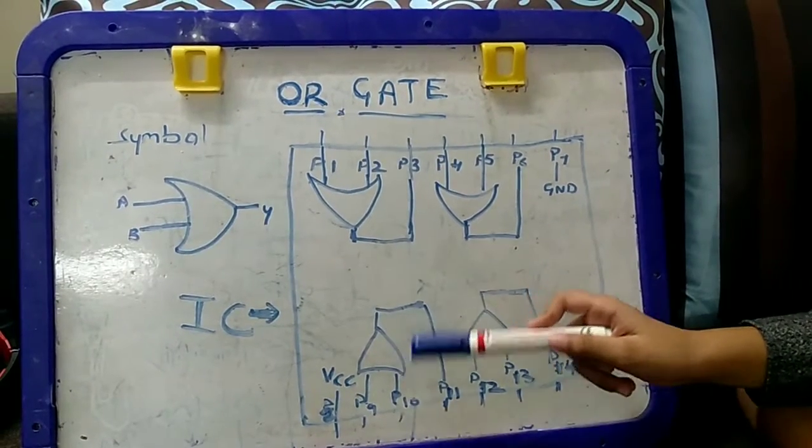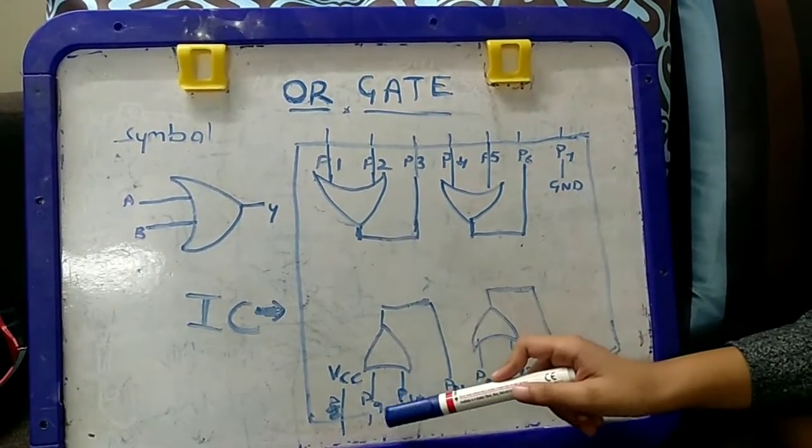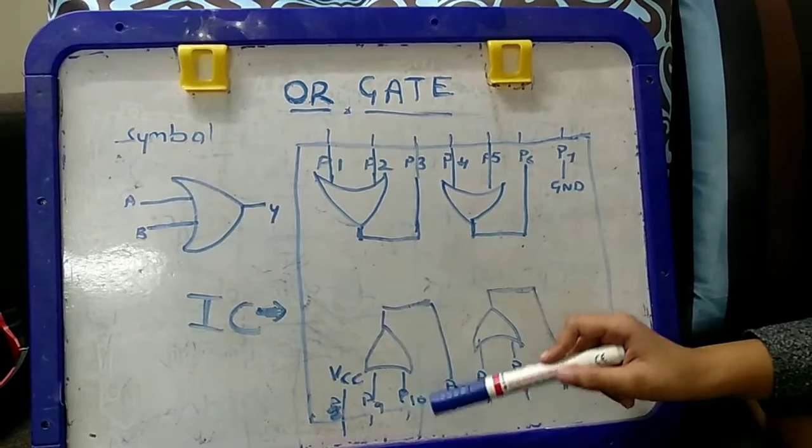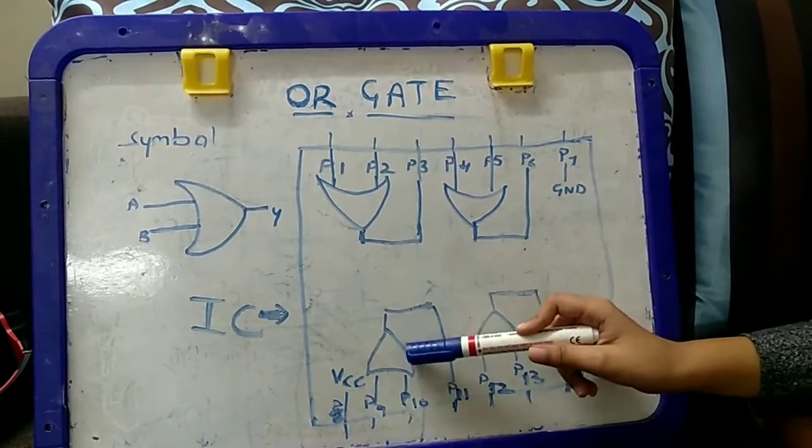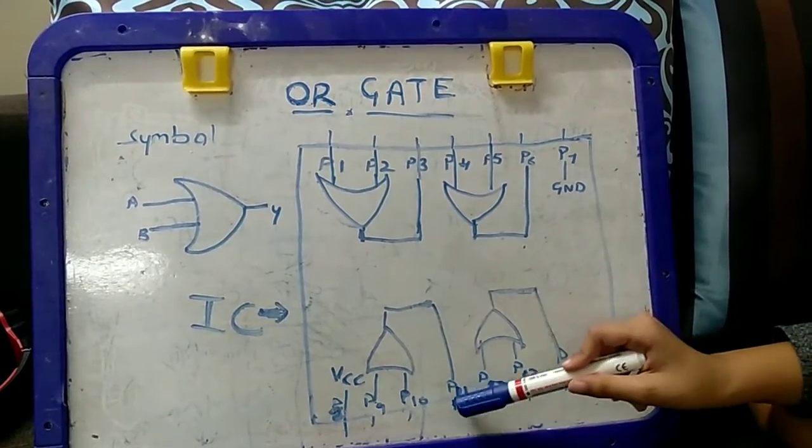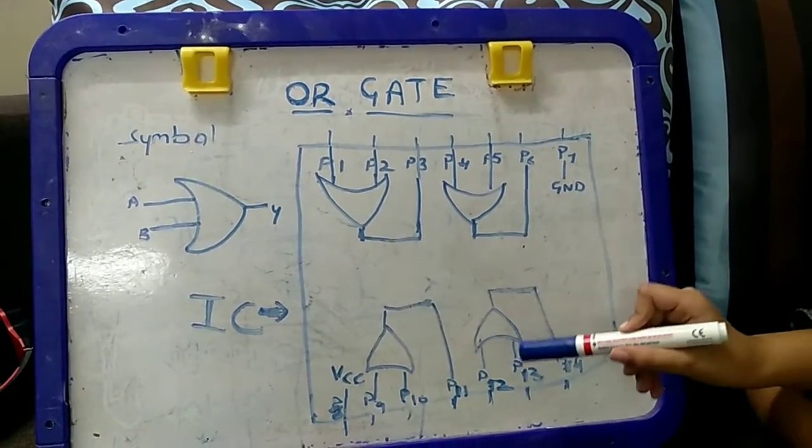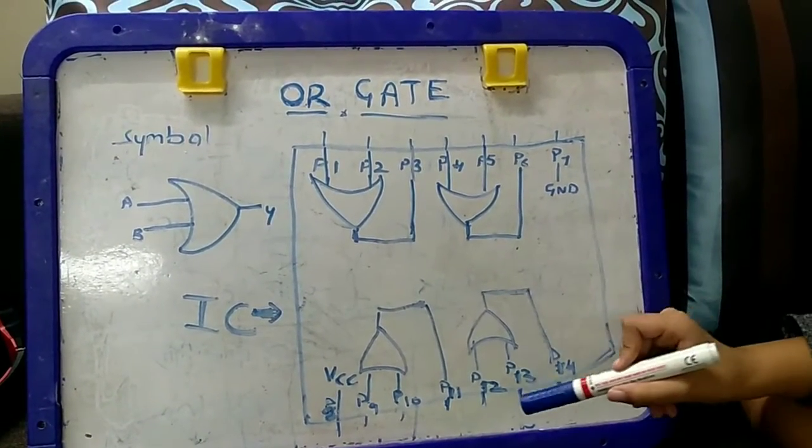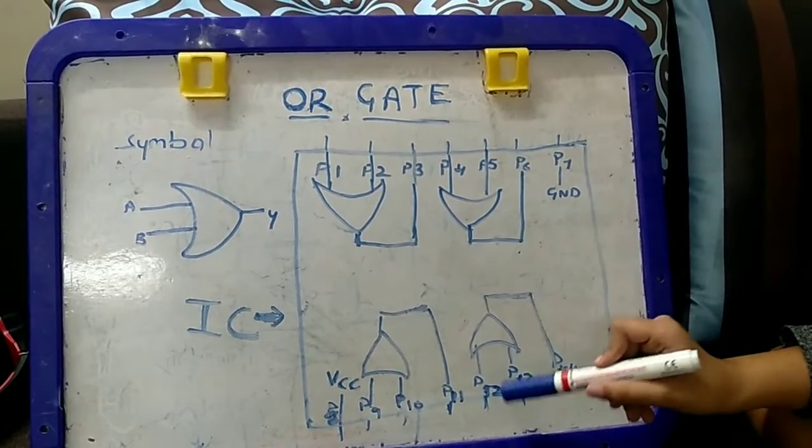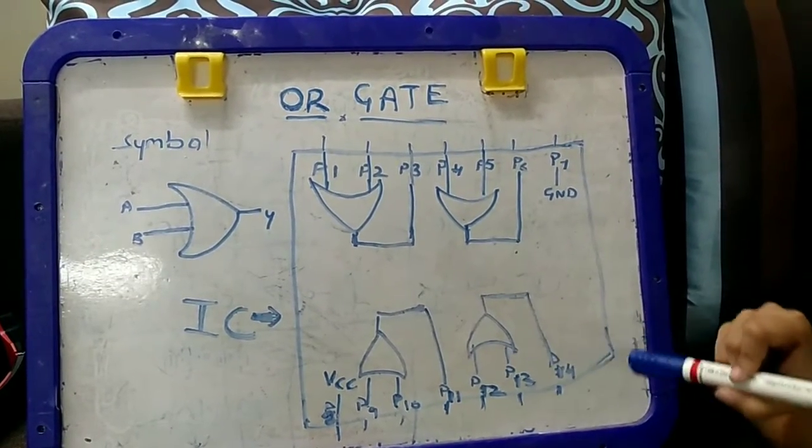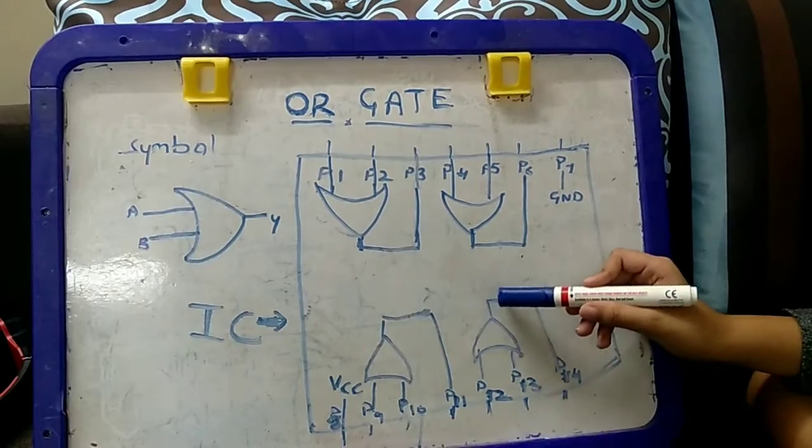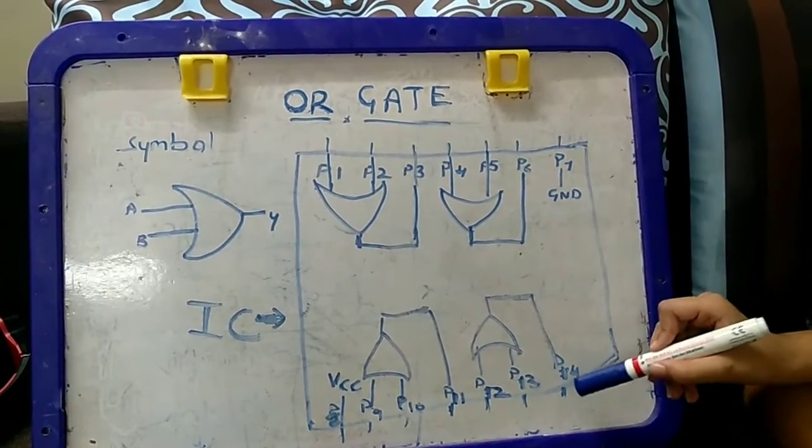The third OR gate input A and B are connected to pin 9 and pin 10, and third OR gate output is connected to pin 11. Fourth OR gate input A and B are connected to pin 12 and pin 13, and fourth OR gate output is connected to pin 14.